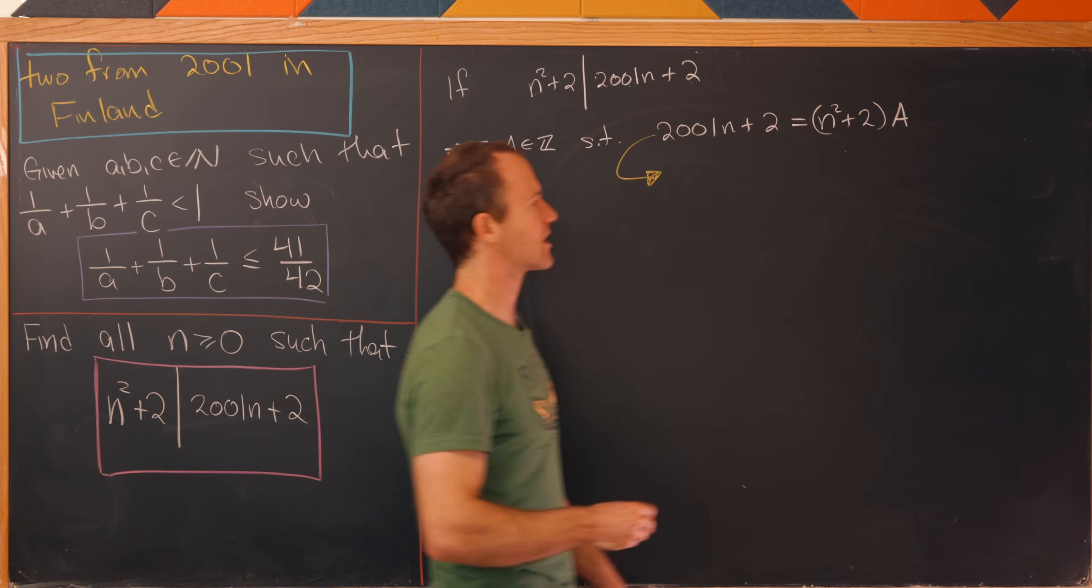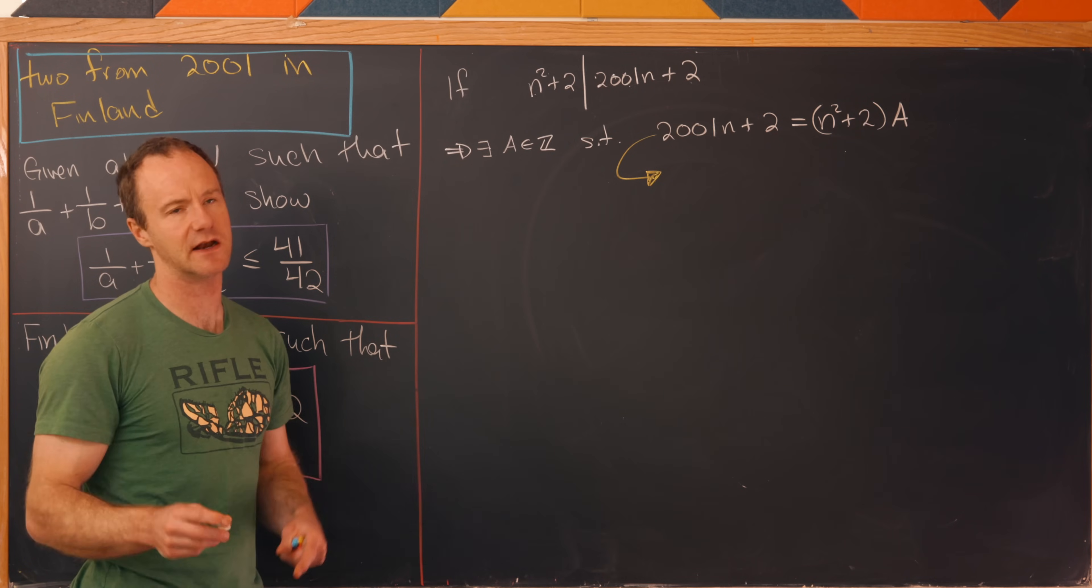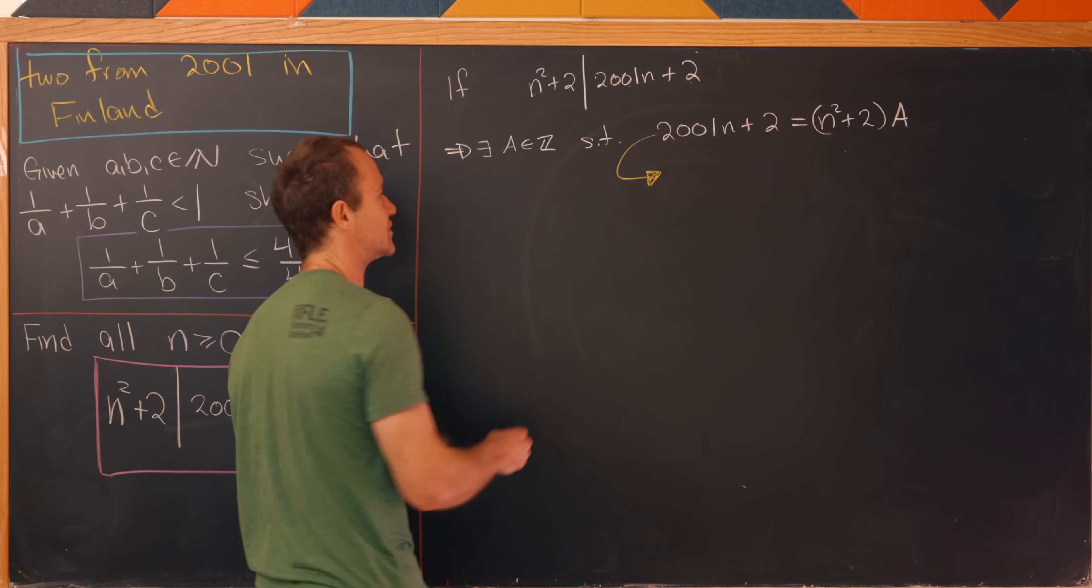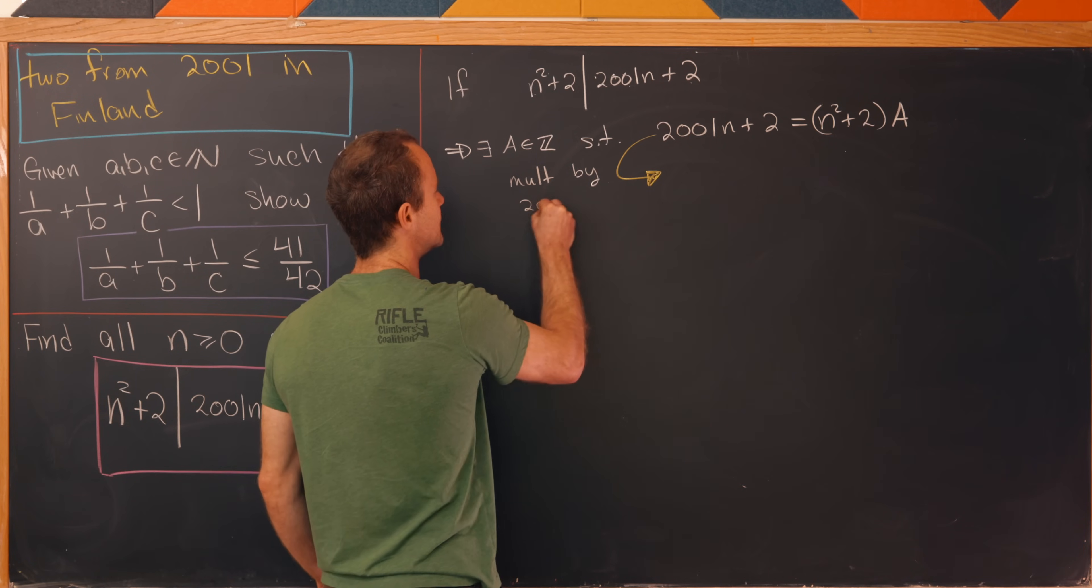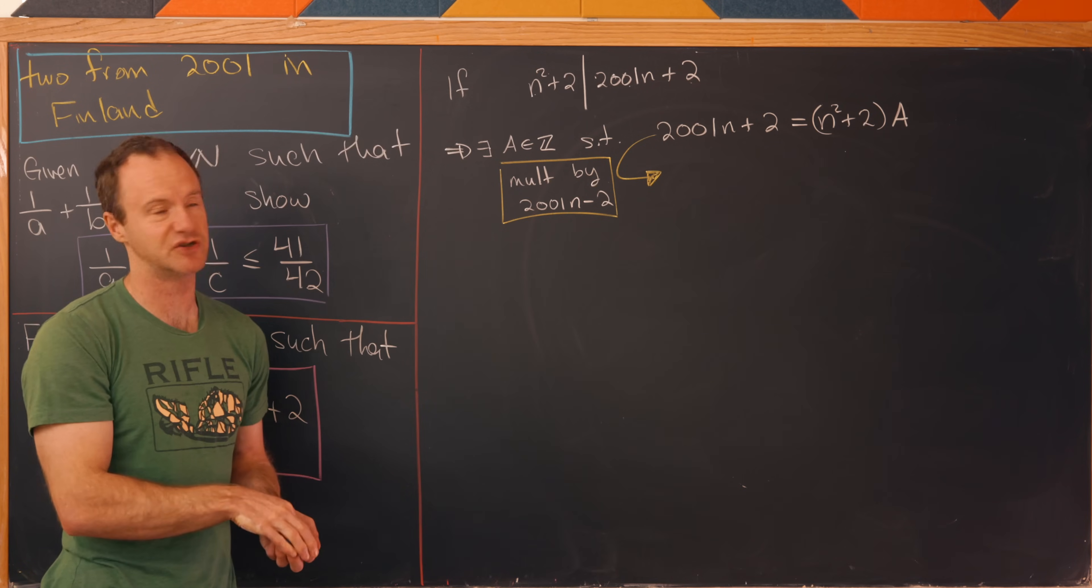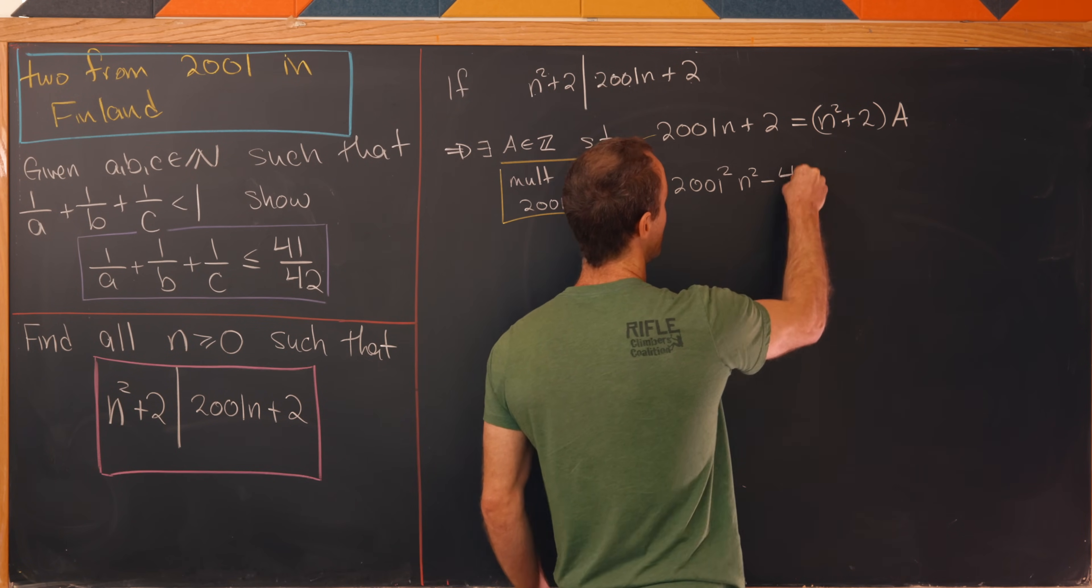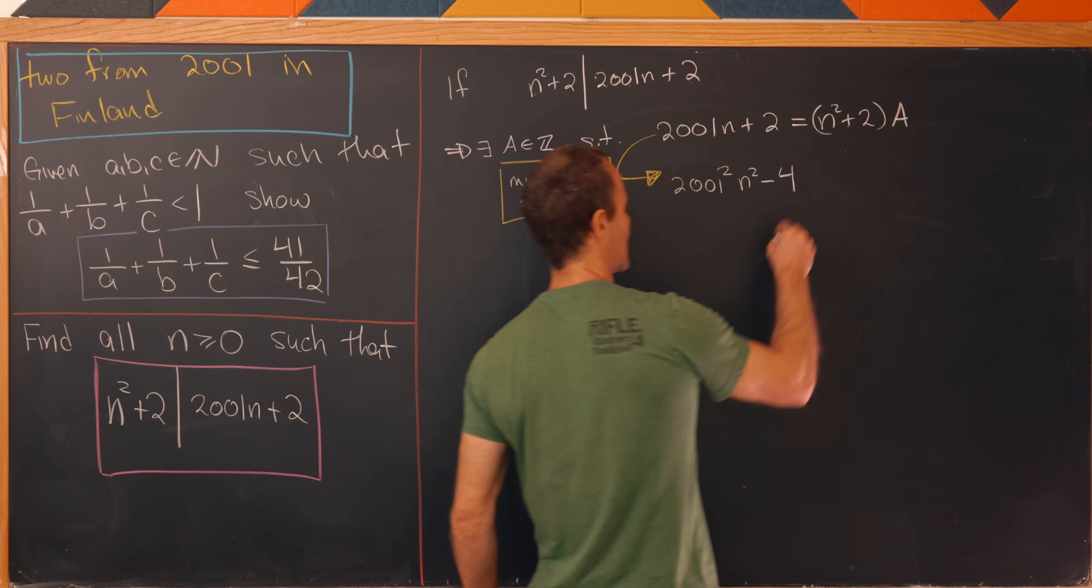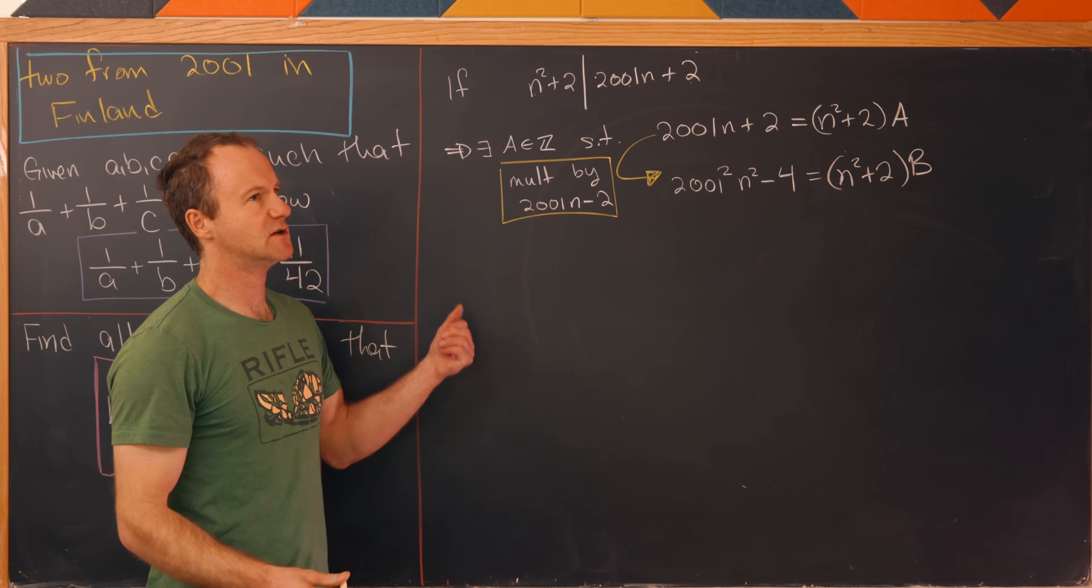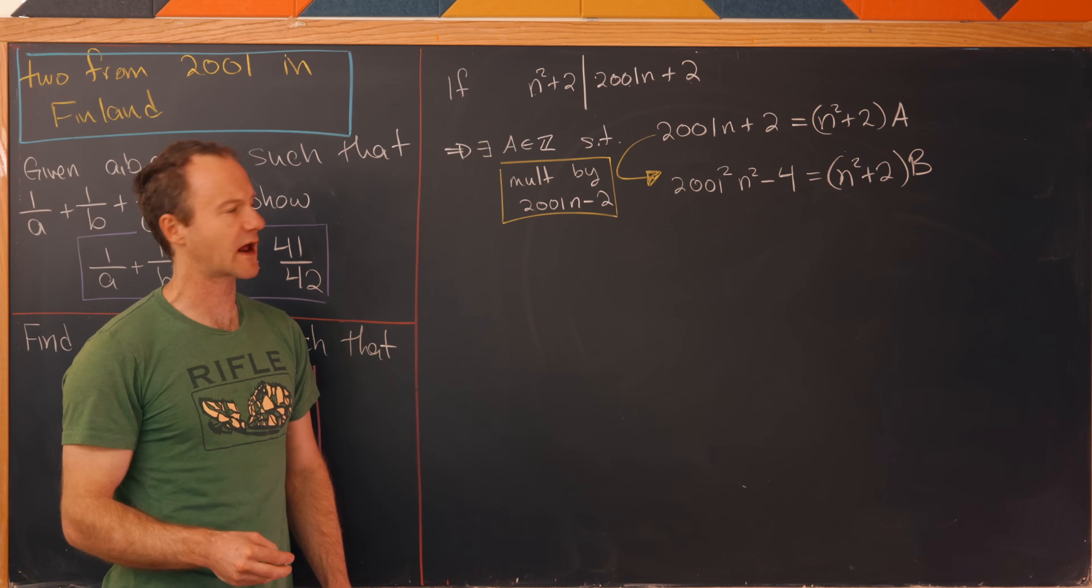Well, I've got this n² over here on the right-hand side, so perhaps I'd like to get an n² over here on the left-hand side, but maybe I'd like to do that without getting a free n, an n by itself or an n that's not squared, I should say. Well, I could do that using a difference of squares factorization idea. So let's multiply by 2001n - 2. So multiply both sides of this by that sort of object. So what is that going to leave us with? We'll have 2001² times n² - 2², which is obviously equal to 4. And then on the right-hand side, I'm just going to write this as n² + 2 times something that I'll call b, where I've just absorbed the factor of 2001n - 2 into this number b.